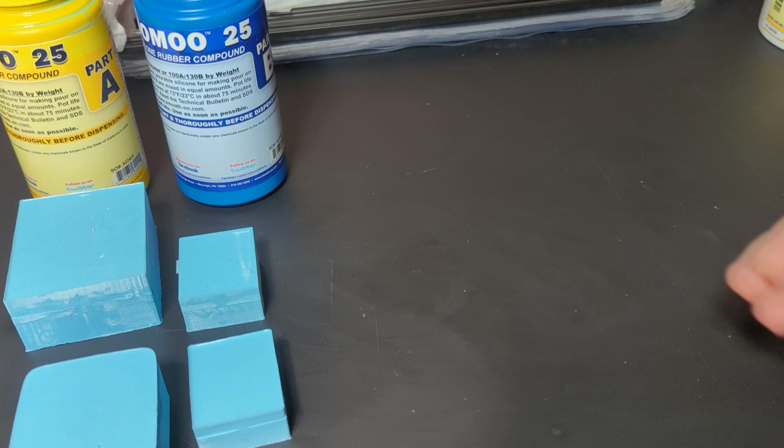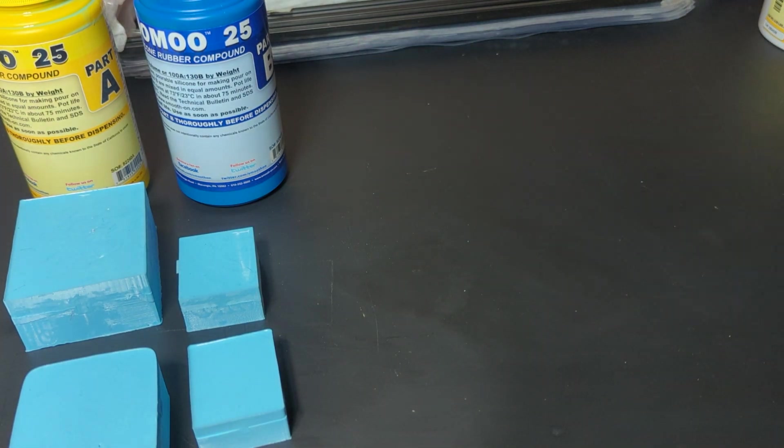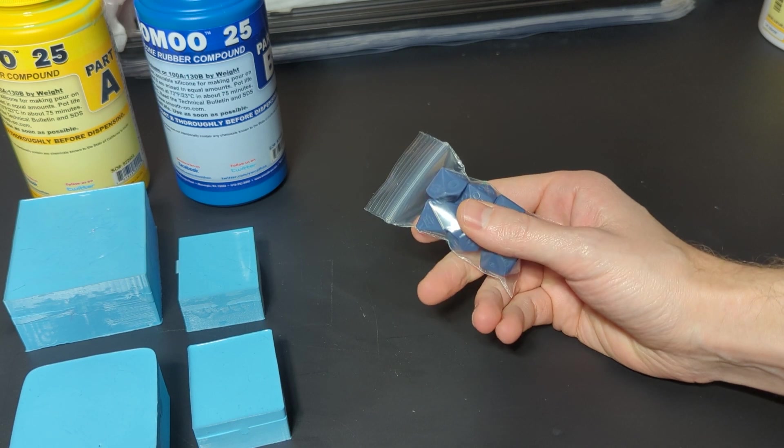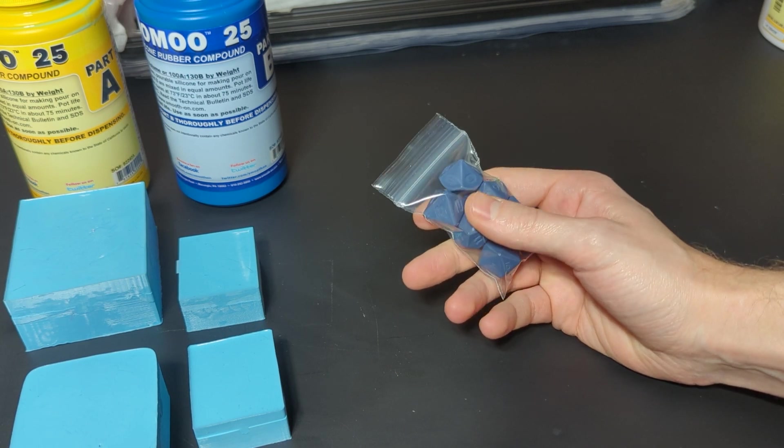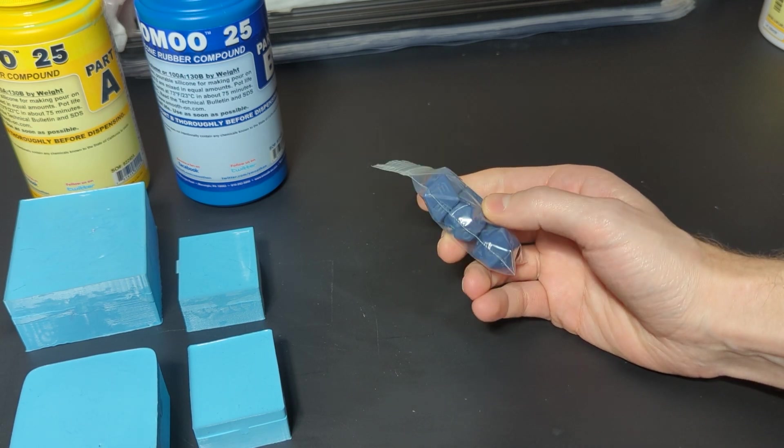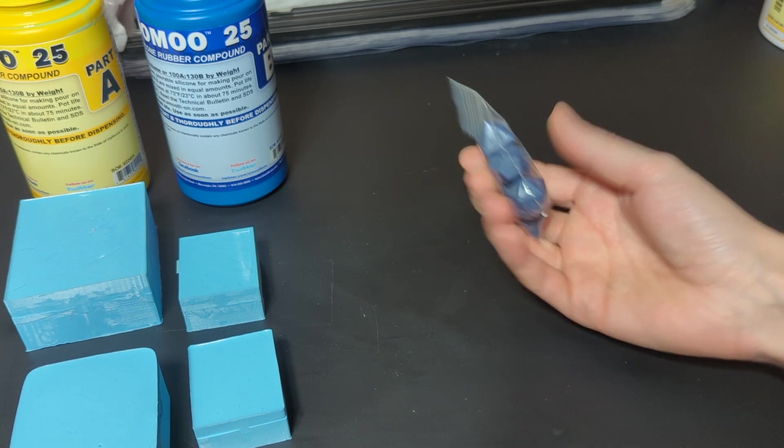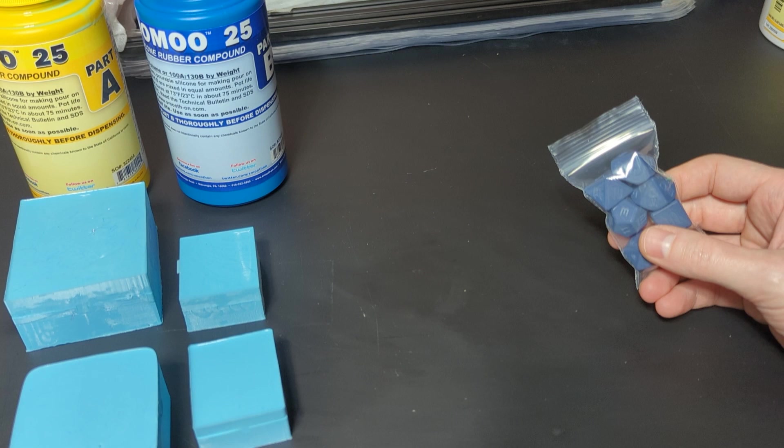I tried a couple of different tin cures making some masters from printed resin. This is from the Siraya Tech ABS-like mixed with a little bit of Tenacious, and these are what I used for all of the molds.